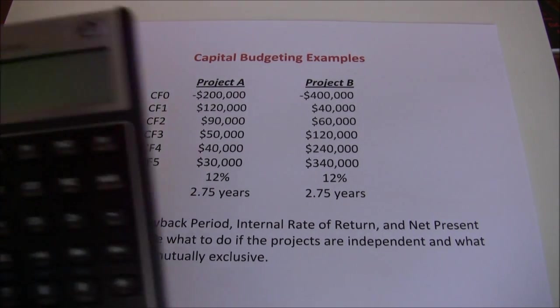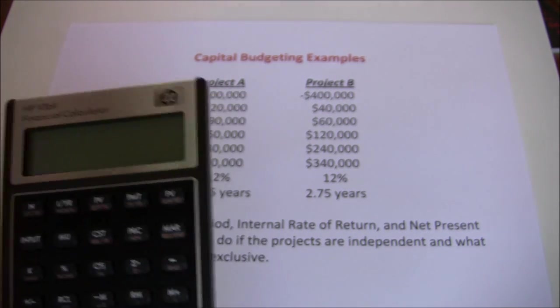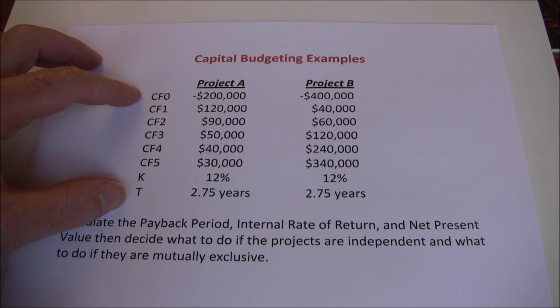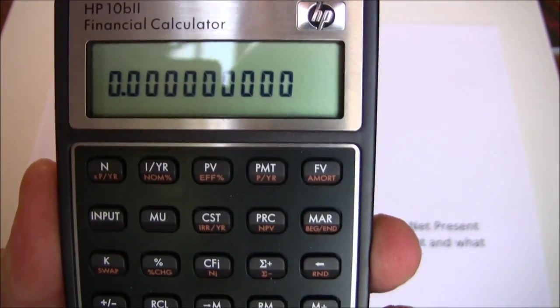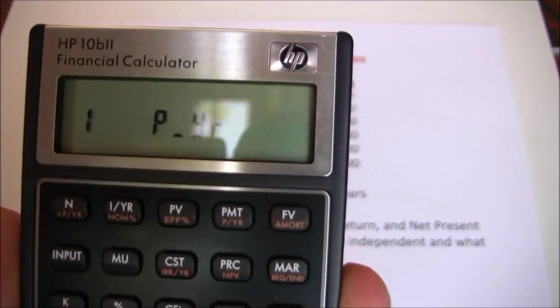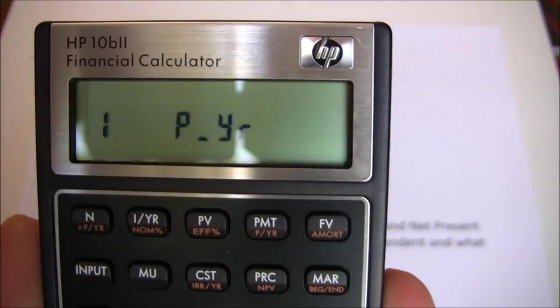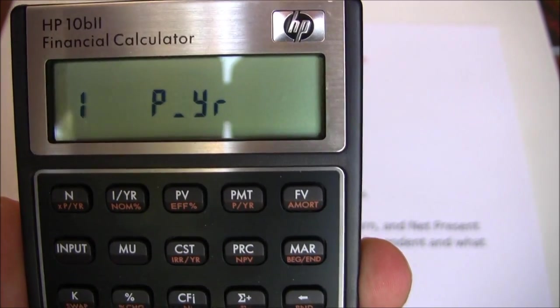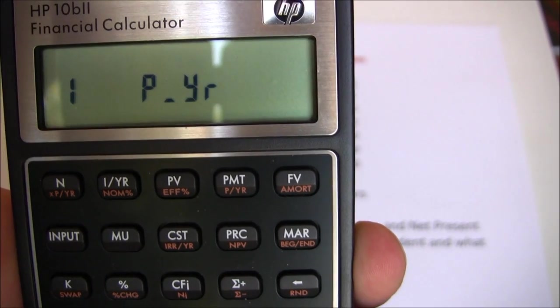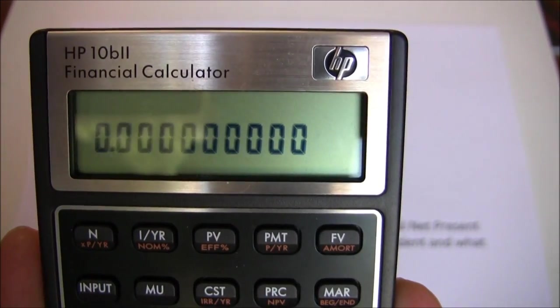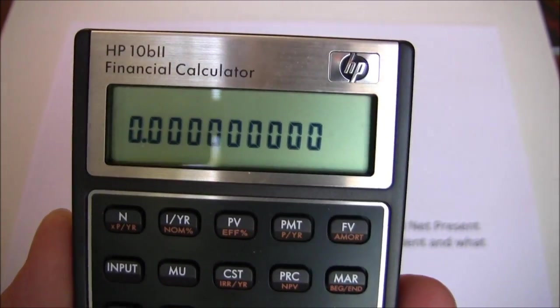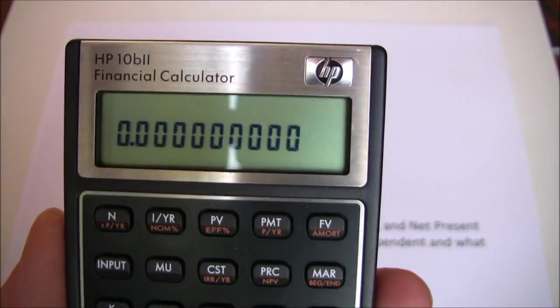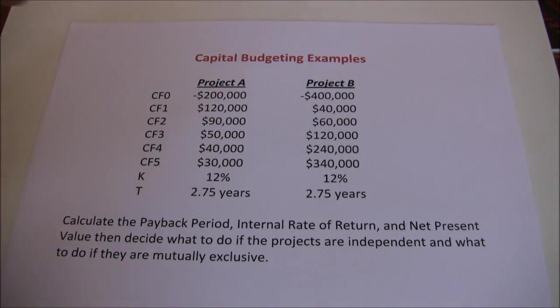Let's go ahead and grab our HP 10B2 financial calculator. Remember, anytime you're dealing with an uneven cash flow stream, the first thing you want to do is clear out the cash flows. Turn the calculator on, then do shift, clear all — one period per year. It's very critical that you make sure these are set to one period per year. If you previously did a problem that's semi-annual, monthly, or weekly using the five key, that key is shared with the cash flow worksheet, so make sure that's set to one period per year.